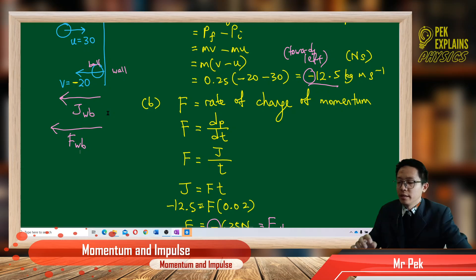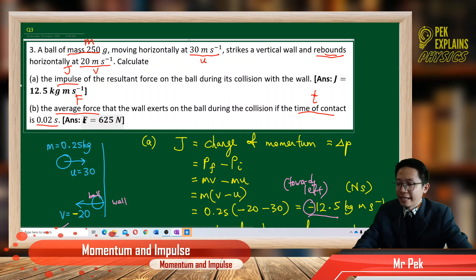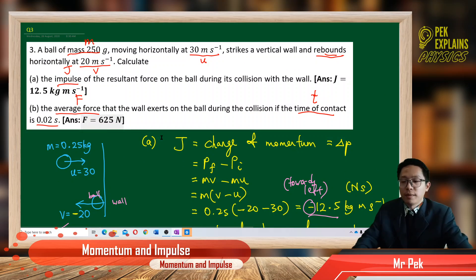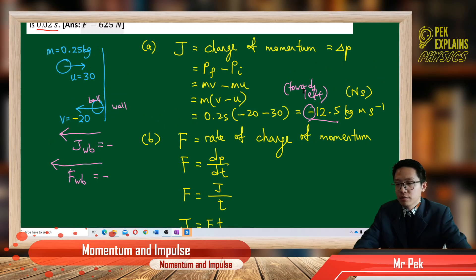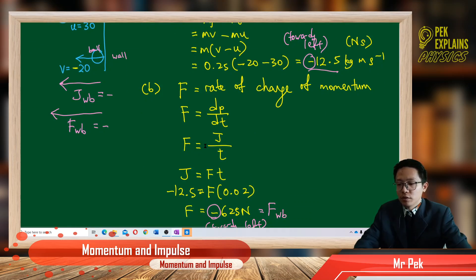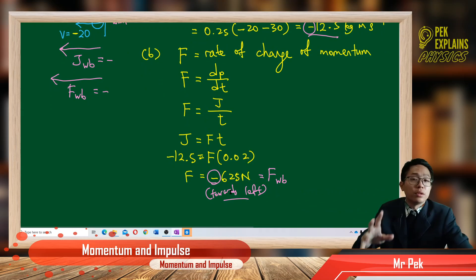So both of these have a negative sign. Actually, the final answer should have a negative. Here, didn't give negative. It's better you put a negative sign because it's towards left. The impulse on the ball and the force on the ball all to the left, causing it to rebound to the left. So negative means to the left.